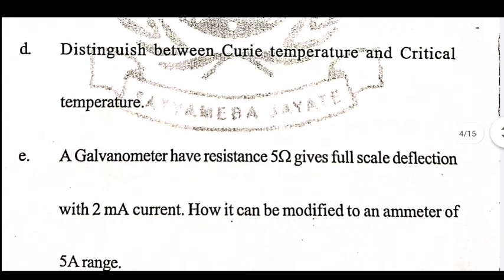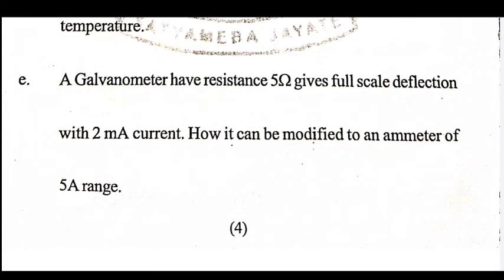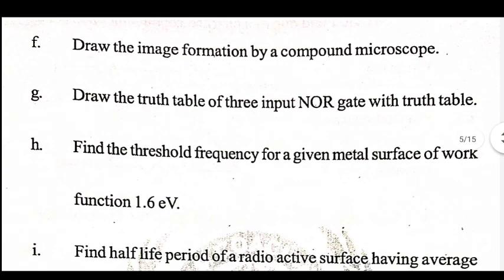Distinguish between Curie temperature and critical temperature. Next: a galvanometer has resistance 5 ohm and gives full scale deflection with 2 microampere current — how can it be modified to an ammeter of 5 ampere range? Draw the image formation by a compound microscope. Draw the truth table of a 3-input NAND gate.